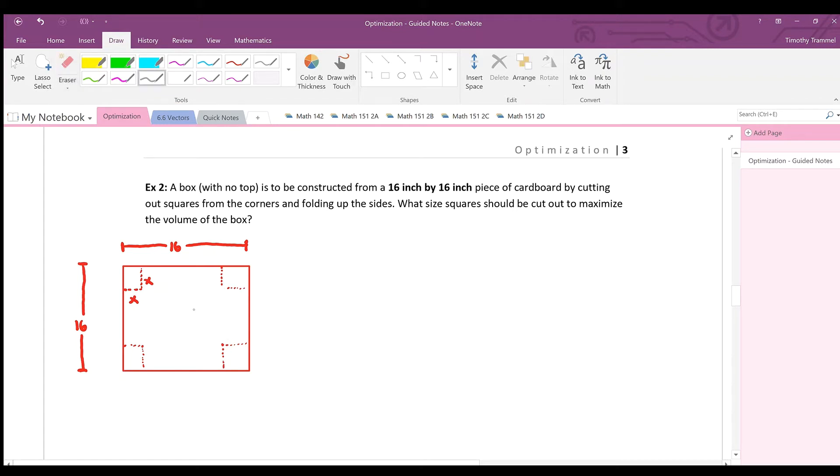So now that we have all this, let's think about what we're trying to do here. It says, what size squares should be cut out to maximize the volume of the box? So what we need to do is figure out how to write the volume of the box. We know that the volume of a box is usually the length times the width times the height.